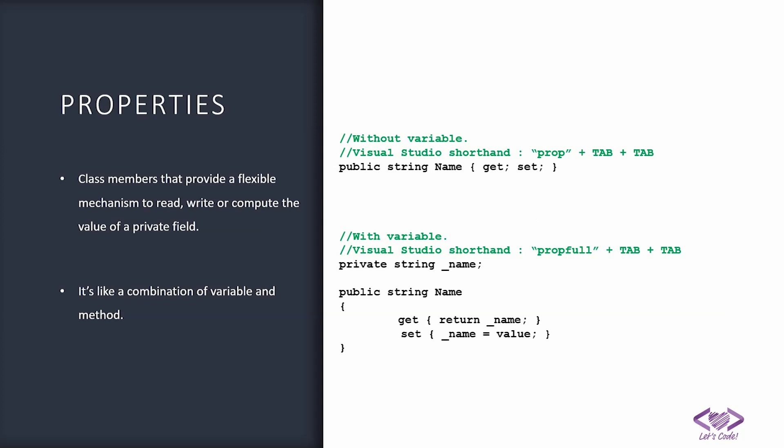The definition is not that clear, so in another way you can understand this: properties are a combination of variable and method. They can be used like a variable to store some values, but they give some extra additional features which normally would only be available in methods. On the right side we have the definition showing how you can define properties in two different ways — one without a variable and one with a variable.